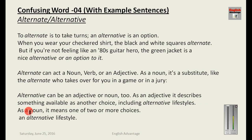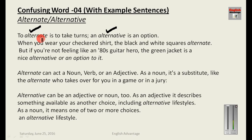The next pair is alternate and alternative. Alternate means to take turns — to go one by one. You must have heard of classes taken alternately. Alternative means an option or a choice. When you wear your checkered shirt, the black and white squares alternate — first the black square appears, then the white. But if you are not feeling like an 80s guitar hero, the green jacket is a nice alternative — an option or a choice.